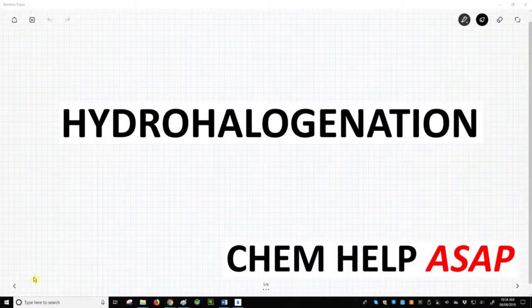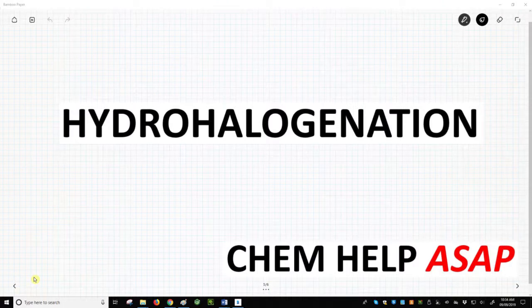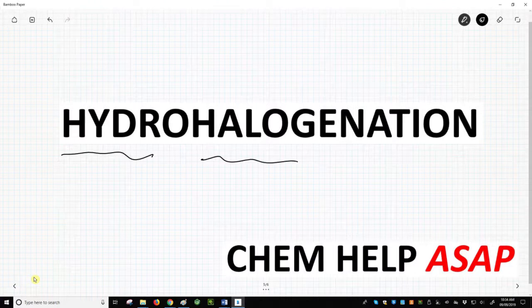Hello from Chem Help ASAP. Let's learn about the hydrohalogenation reaction, which is the electrophilic addition of a hydrogen and a halogen across a carbon-carbon pi bond.